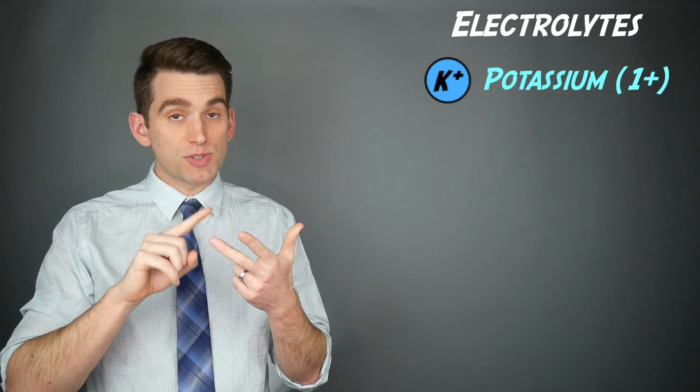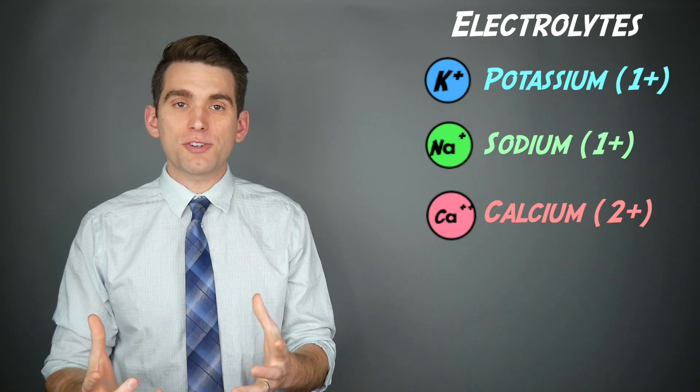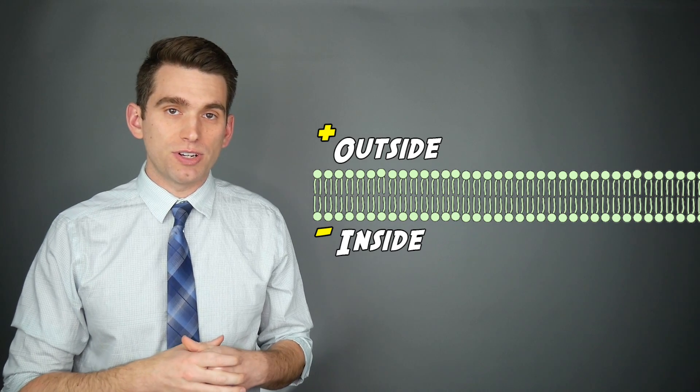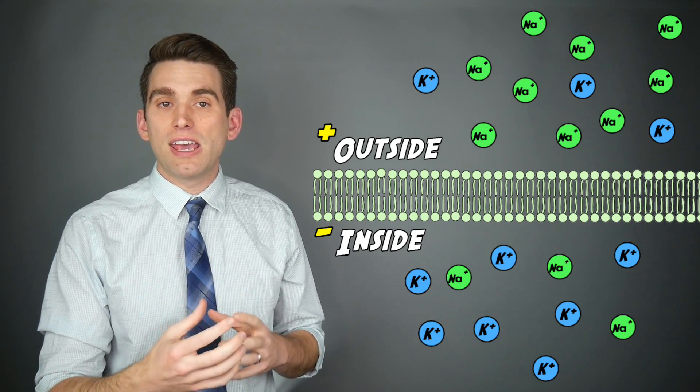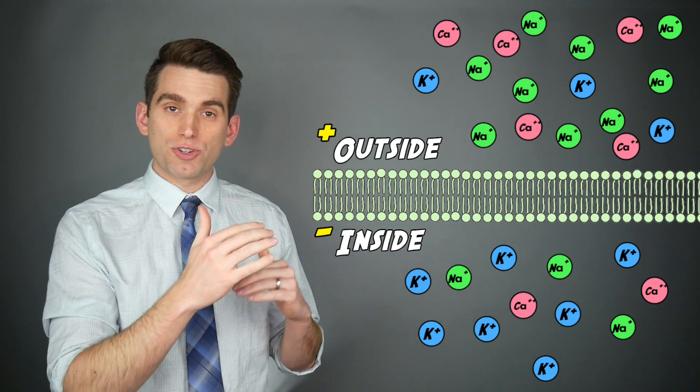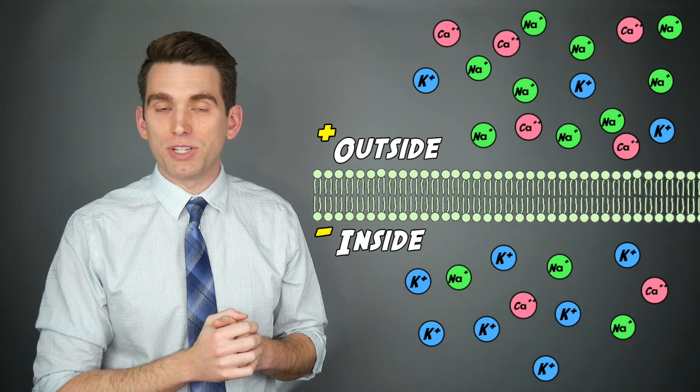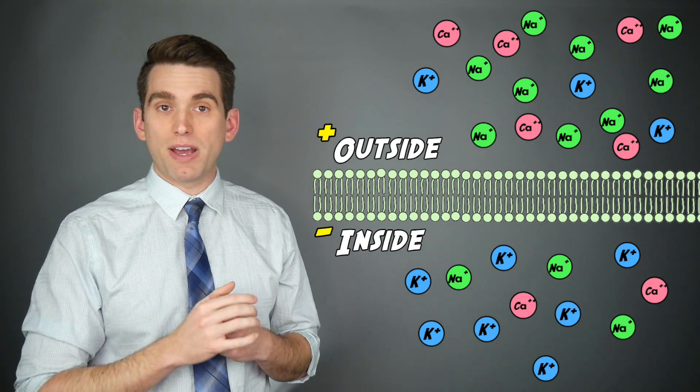Electrolytes like potassium, sodium, and calcium have an electrical charge associated with them. Depending on the distribution of these electrolytes between the inside of the heart muscle cells and the outside, you get this resulting potential charge, kind of like a battery voltage, that's generated across the boundary of the cell.